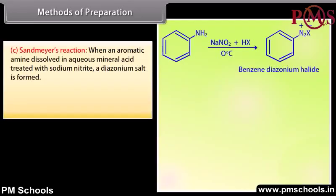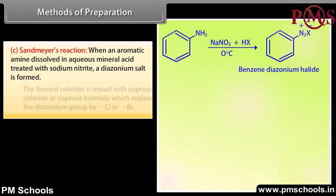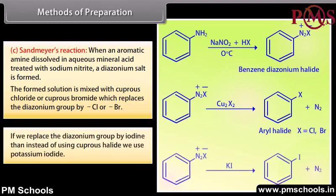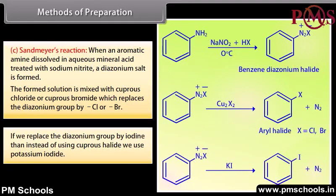Sandmeyer's reaction: when an aromatic amine dissolved in aqueous mineral acid is treated with sodium nitrate, a diazonium salt is formed. The formed solution is mixed with cuprous chloride or cuprous bromide, which replaces the diazonium group by Cl or Br. If we replace the diazonium group by iodine, then instead of using cuprous halide, we use potassium iodide.